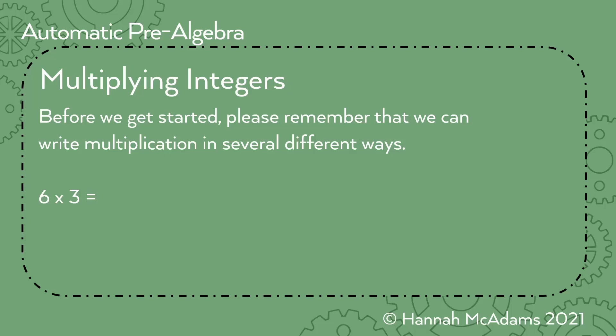Before we get started, please remember that we can write multiplication in several different ways. So here we have six times three — what is six times three? Eighteen. But we could also write it six parentheses three, which means the same thing as six times three. Or we could write parentheses six times parentheses three. Or we could write six dot three. I will definitely use more parentheses, but I do want you to see all of those different options.